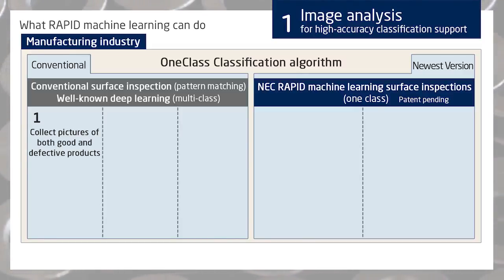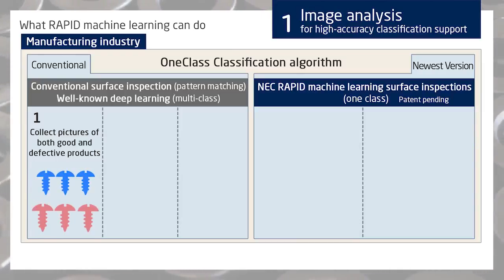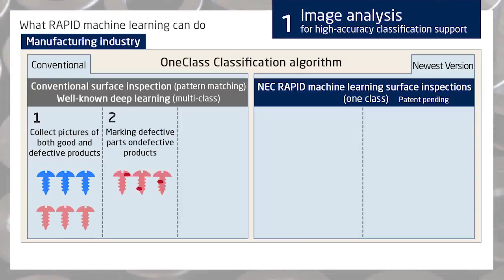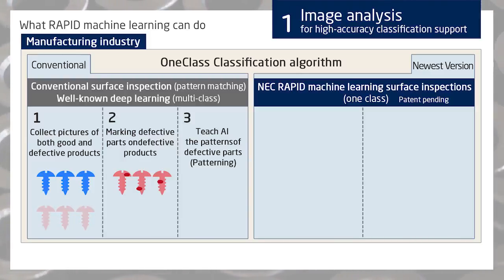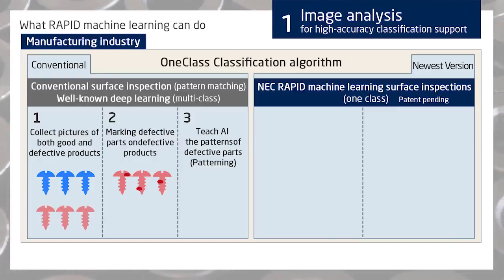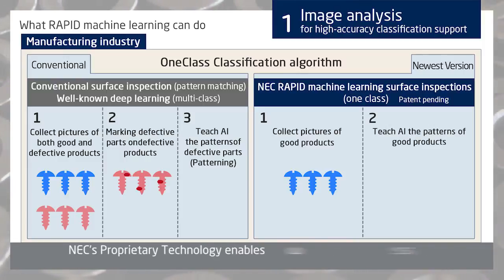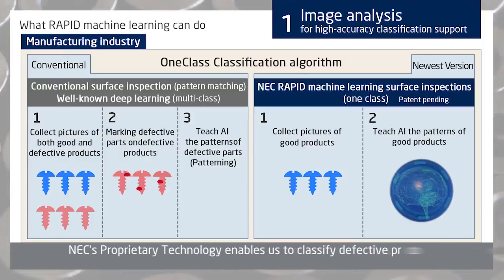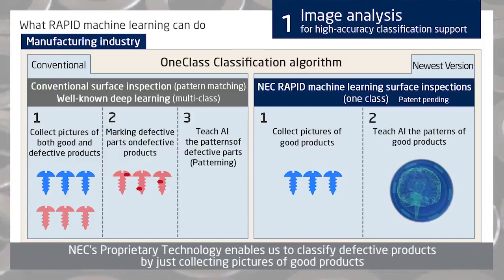Image analysis requires a huge number of pictures of both good and defective products to be collected for learning by AI. But collecting pictures of defective products is no easy matter in the precision manufacturing industry. The one-class classification algorithm uses proprietary NEC technology to enable defective products to be identified just by learning pictures of good products.